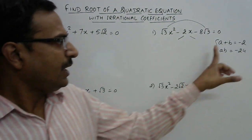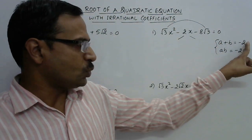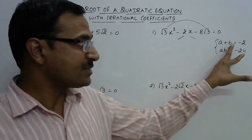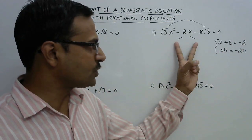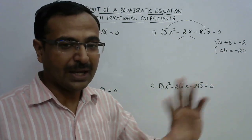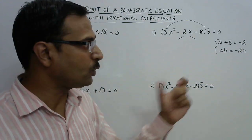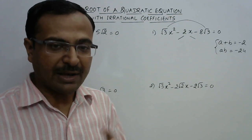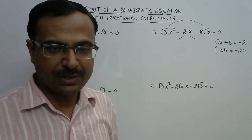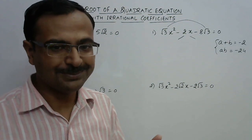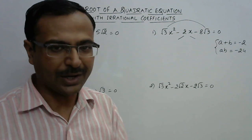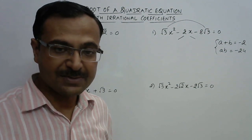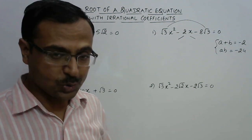The sum is -2, so the difference between the two factors should be 2. We try 4 and 2 — product is not 24. We try 5 and 3 — product is not 24. Then 6 and 4: the product of 6 and 4 is 24 and the difference is 2.